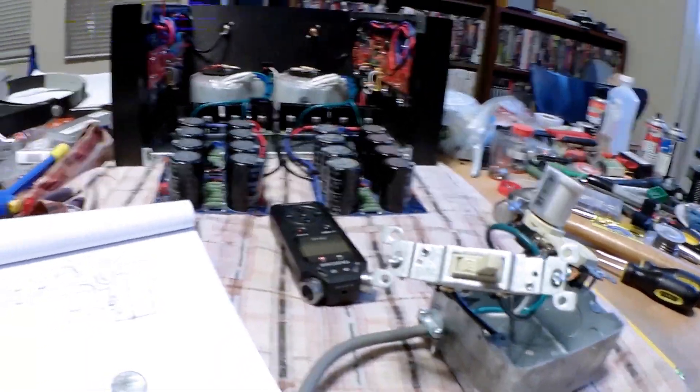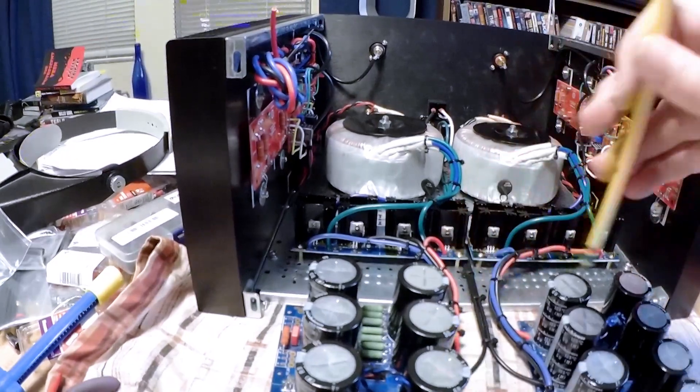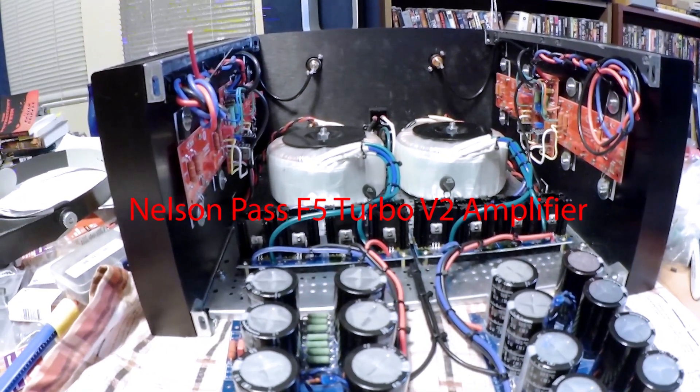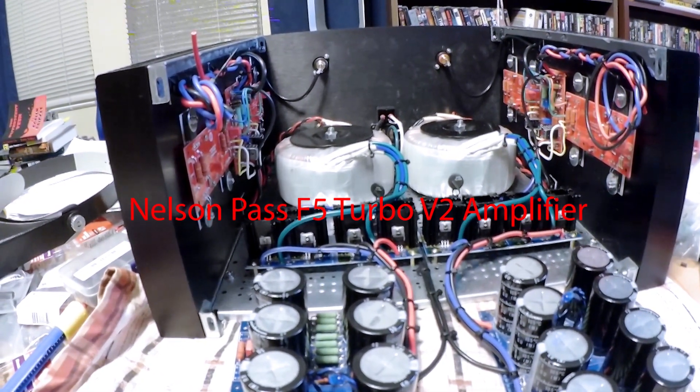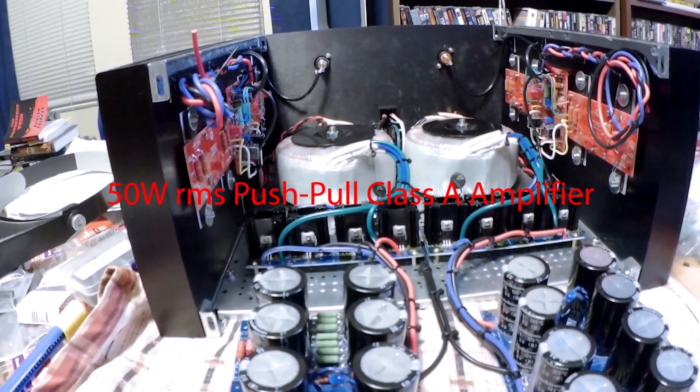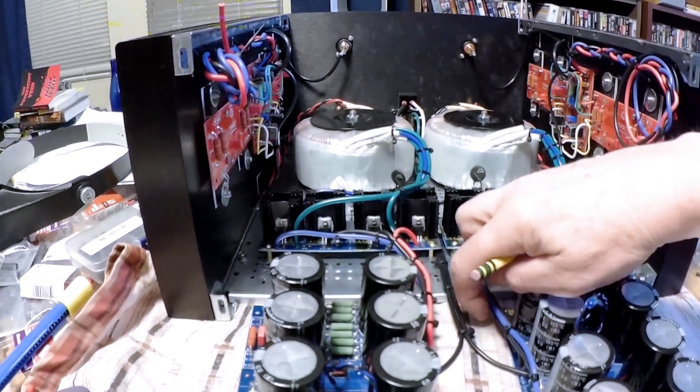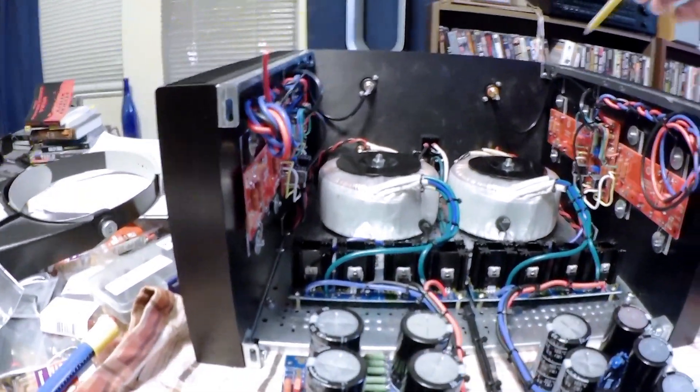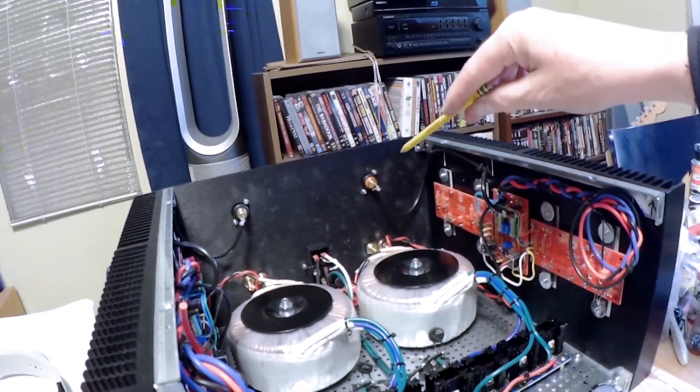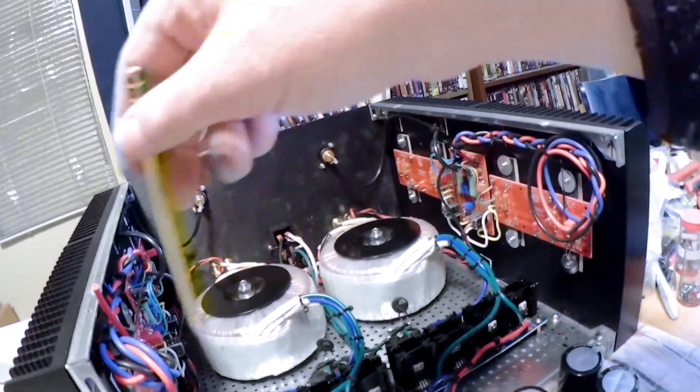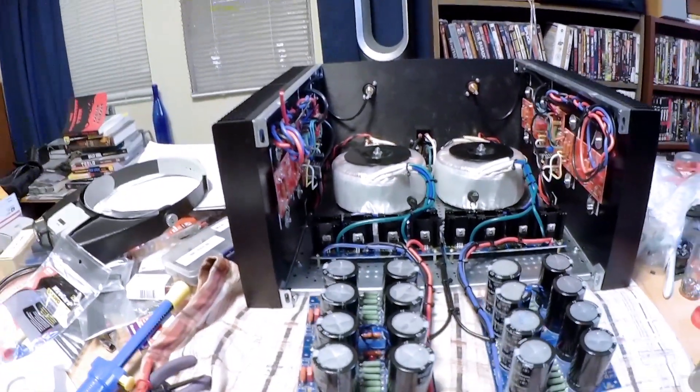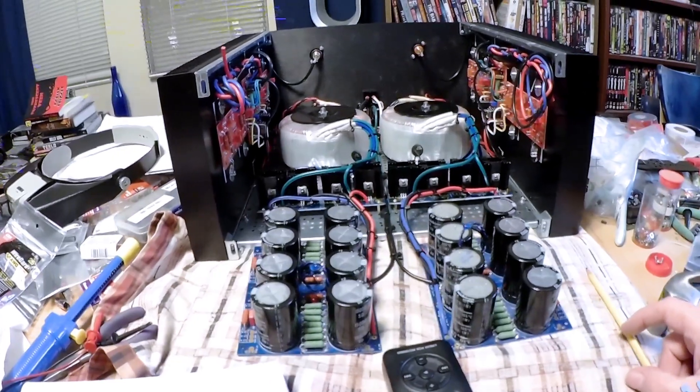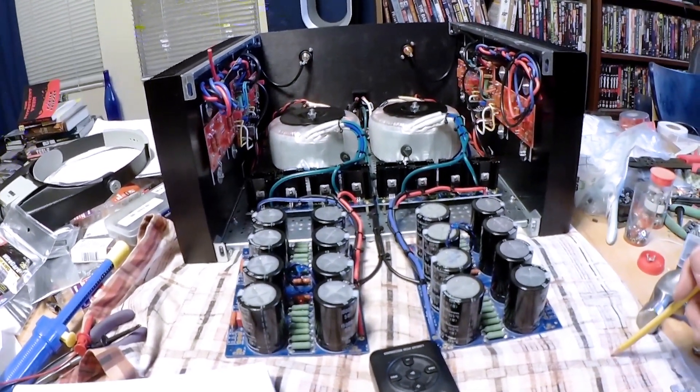At this point I have the capacitor boards on the Nelson Pass F5 turbo amp wired up, and I'm ready to check them for hopefully full and symmetrical output. That would be nice, that would be a good thing. The amplifier boards are wired to the back panel now, just not connected power wise. So I want to make sure the supplies work, and then I'll wire them up to the capacitor boards and get the whole thing, see what happens.